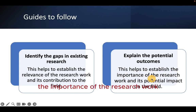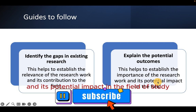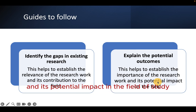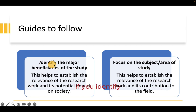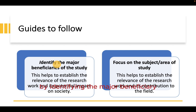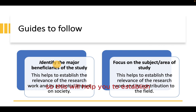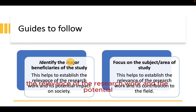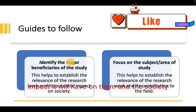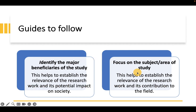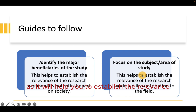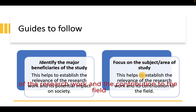The second thing is the significance of study should explain the potential outcome, as it will help to establish the importance of the research work and its potential impact in the field of study. You should identify the major beneficiaries of the study and state how they are going to benefit specifically. This will help establish the relevance of the research work and the potential impact it will have on them and the society.